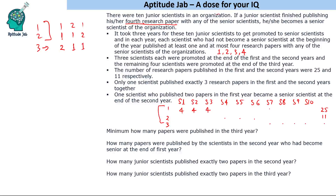Let's say S7 is the scientist who published exactly three papers in years one and two combined — so S7 published only one paper in year three. The other three scientists (S8, S9, S10) must have published one plus one across years one and two, and two papers in year three. So their distributions are: one, one, two across the three years.